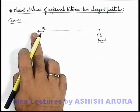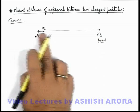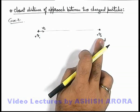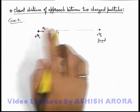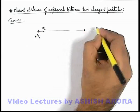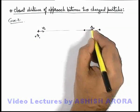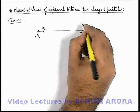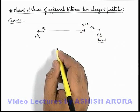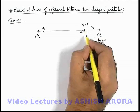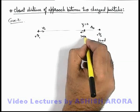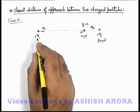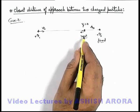As both of these are positive charges, they will repel each other. As charge q₁ comes close to q₀, its speed decreases, and after reaching a closest distance r₀, it will return because its final speed becomes zero due to repulsion. This is the position when both charges are at rest and there is no kinetic energy left in q₁.